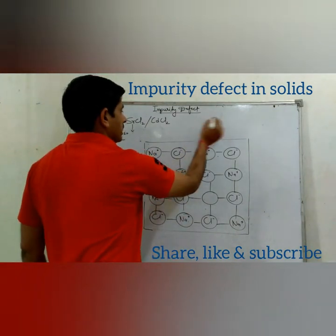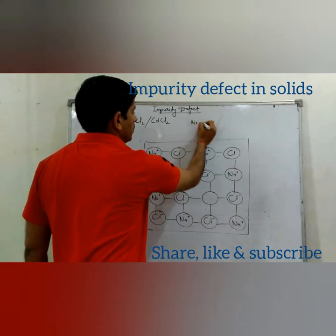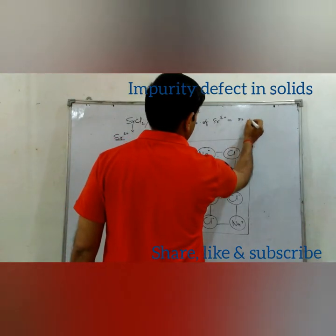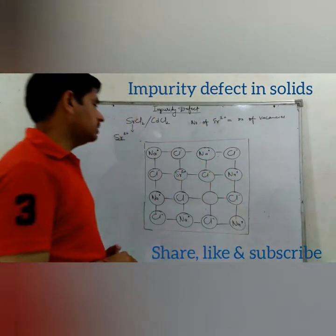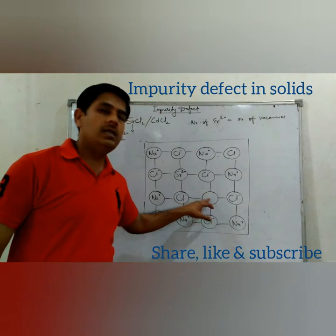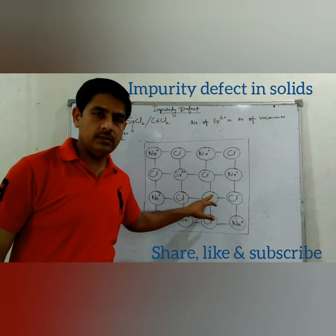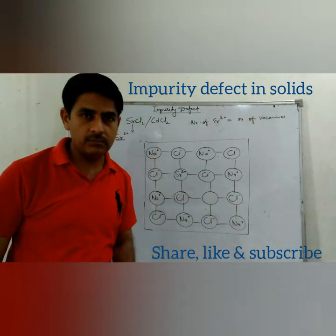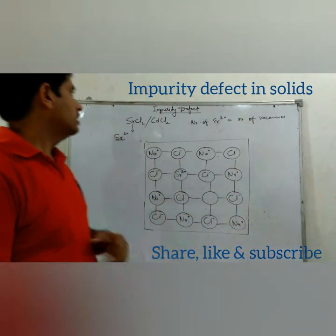Suppose we have N number of Sr²⁺ ions — we have the same number of vacancies. These vacancies are cationic vacancies, as each vacancy is left by a cation, Na⁺ ions. So the number of cationic vacancies equals the number of Sr²⁺ ions. And this is impurity defect.